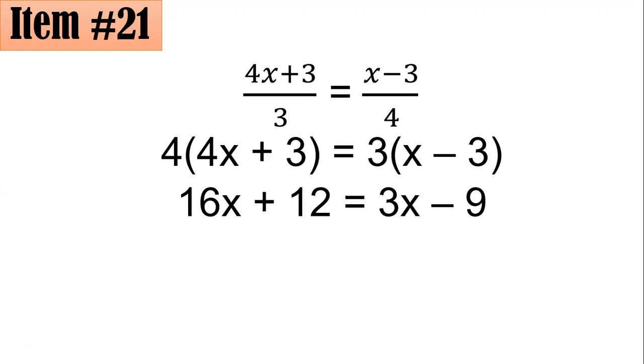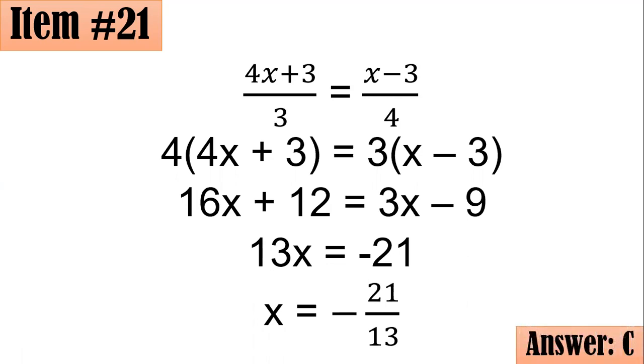And also, I will subtract both sides by 3x, and I will subtract both sides by 12 as well. So that gives us 13x equals negative 21. Dividing both sides by 13 to get the value of x, we have x equals negative 21/13, letter C.